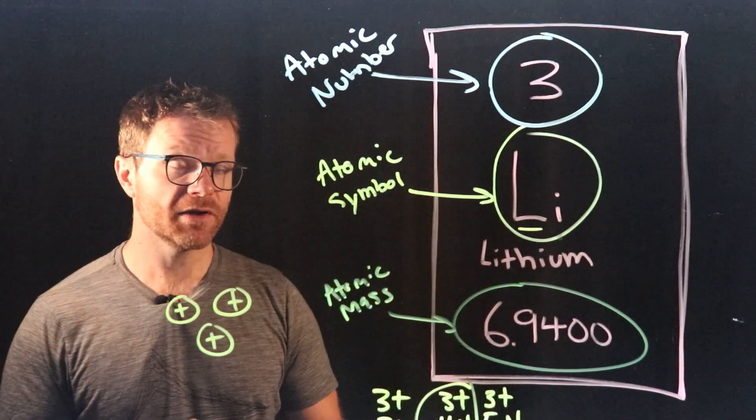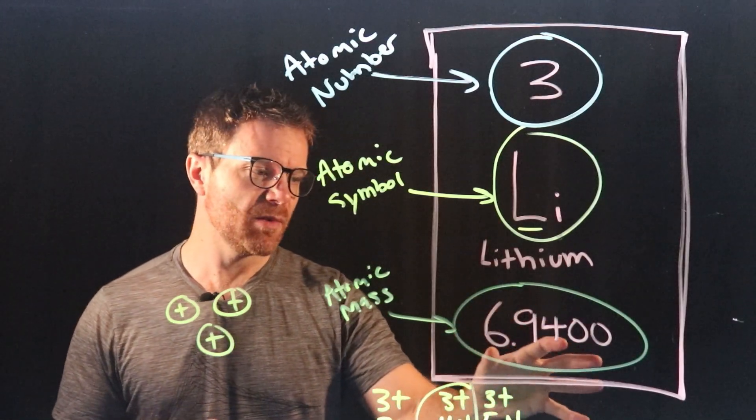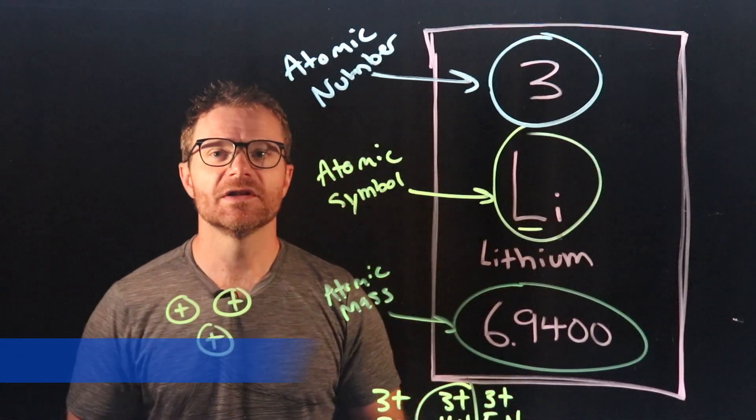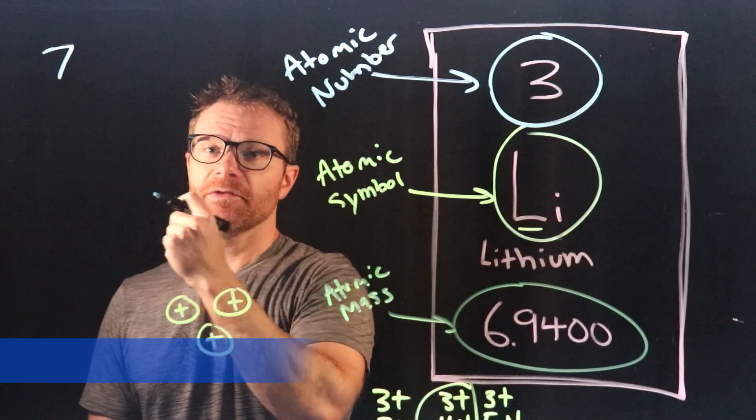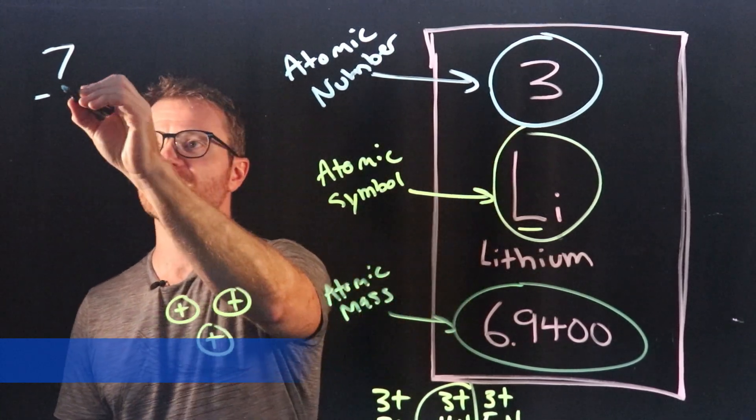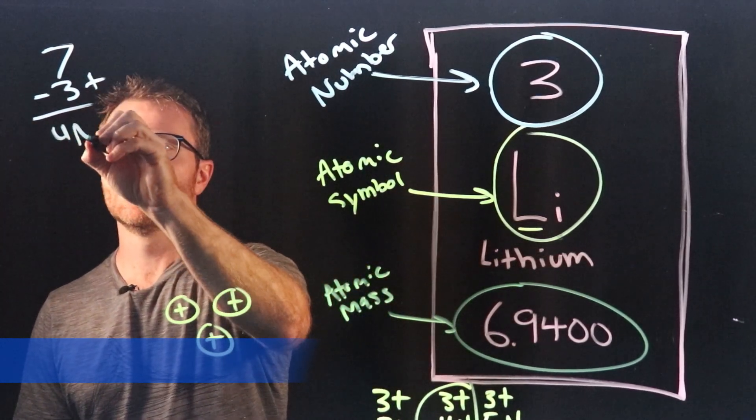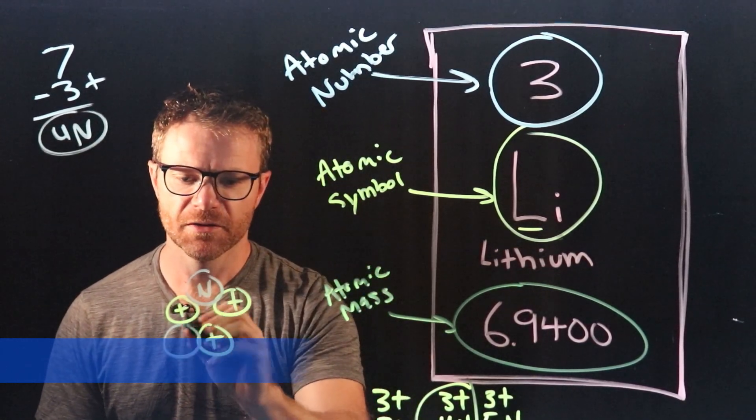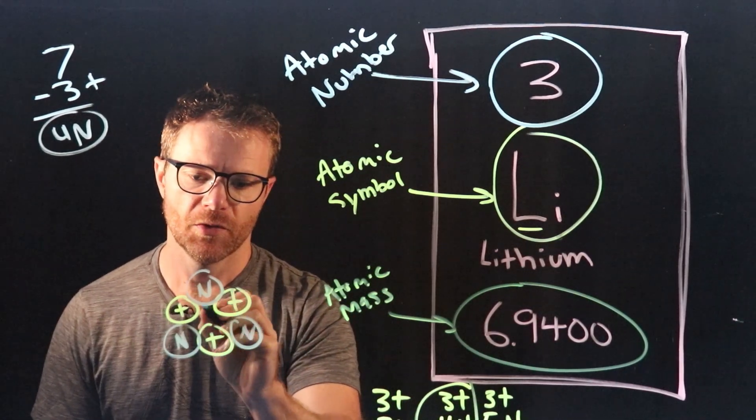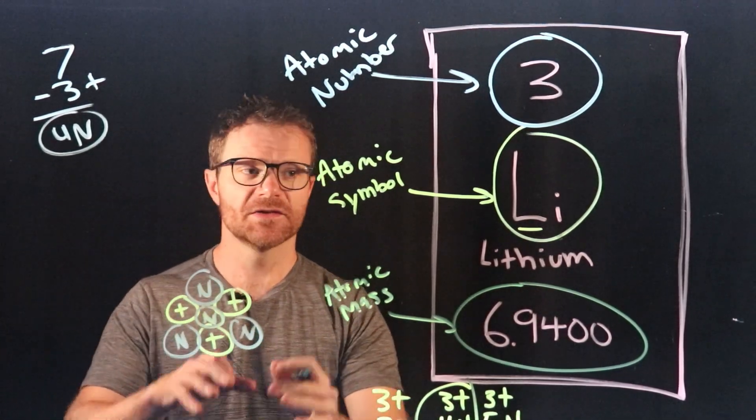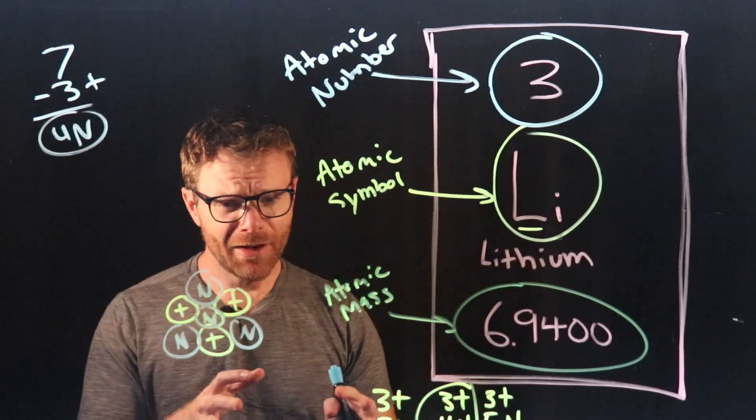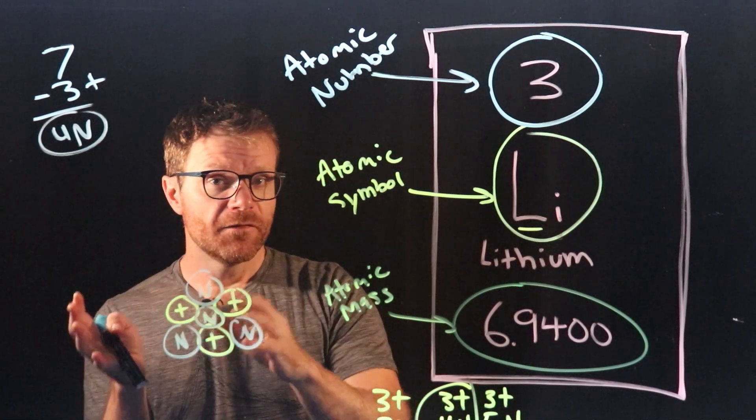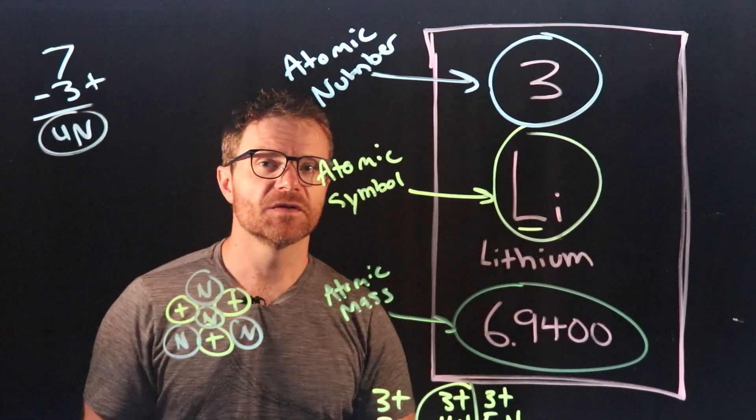And I'll draw them as little plus signs because protons all have a positive charge. How many neutrons are there in the nucleus? Well the nearest whole number for the atomic mass is seven. And the atomic mass is the number of protons plus neutrons put together. So if we have an atomic mass of seven and we have three protons that leaves four neutrons. So let's add four neutrons to our nucleus there. Put one in the middle. And there's our nucleus. So the nucleus of a lithium atom is on average four neutrons and three protons. It could also be more or fewer neutrons but the number of protons will always be the same.